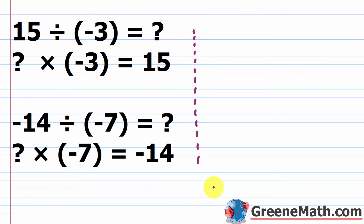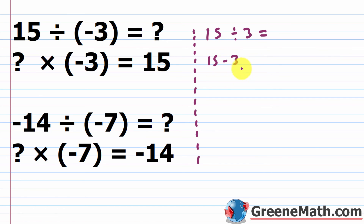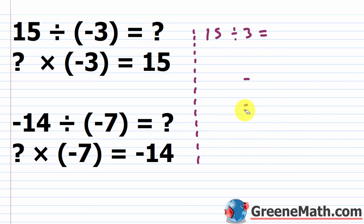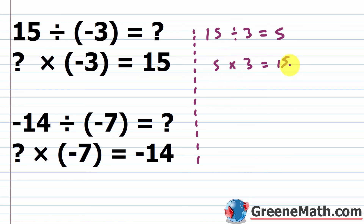Let's think about where the sign rules come from. Take 15 divided by 3: we know this is 5, because five times three is 15. Using that logic, what is negative 15 divided by 3? We ask: what times three gives negative 15? Since three is positive, the answer must be negative five — and negative five times three is negative 15. And 15 divided by negative 3: what times negative three equals 15? That would be negative five, since negative times negative is positive. So 15 divided by negative three equals negative five.